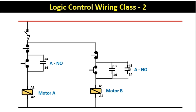I am connecting this NO contact in parallel here. This completes the circuit to start and stop motor B. You can see that if motor A gets on, then this NO contact will become NC. Due to this, power supply flows through here and goes directly to motor B, turning motor B on.